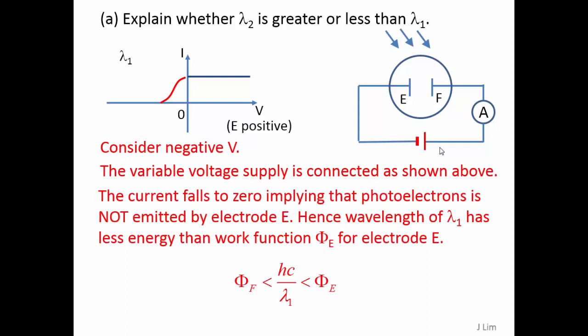The current falls to zero, implying that photoelectrons is not emitted by electrode E. Hence, the wavelength of lambda 1 has less energy than the work function for electrode E. So this is the relationship where work function of F is less than hc over lambda 1 and that is less than the work function of electrode E.